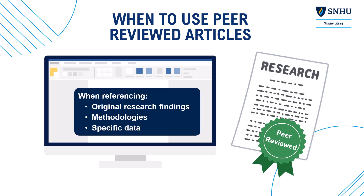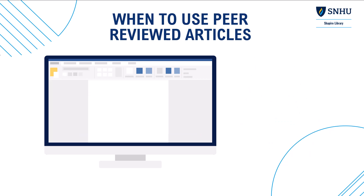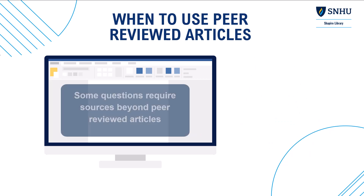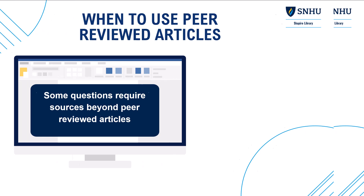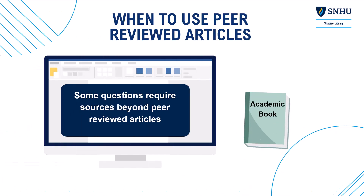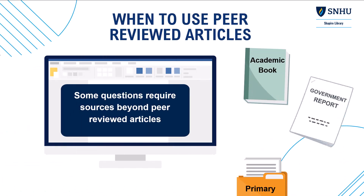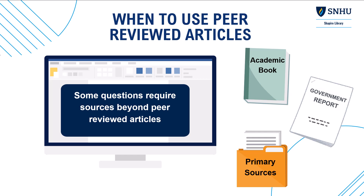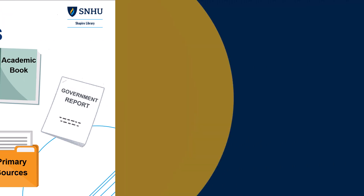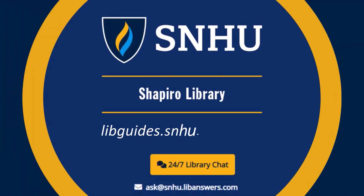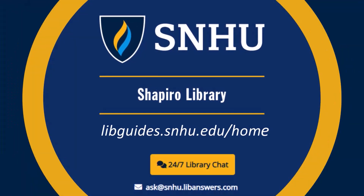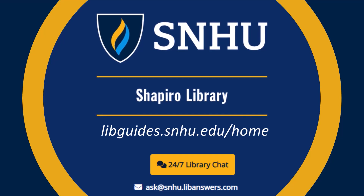However, keep in mind that not all questions can be answered solely through peer-reviewed articles. Credible sources like academic books, government reports, and primary sources are also important. When you start your next research journey, remember the library has many databases you can search to find peer-reviewed articles.